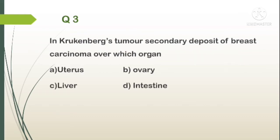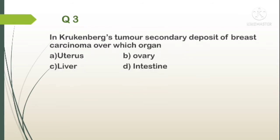Question number 3. In Krückenberg's tumour, secondary deposit of breast carcinoma occurs over which organ? A. Uterus, B. Ovary, C. Liver, D. Intestine. Answer: B. Ovary.